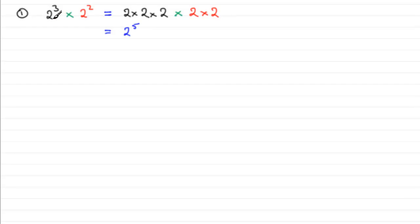We should be able to go straight to this answer without writing it all out in full. This suggests that all we need to do is add our powers, as long as our base value is exactly the same. Our base value in this example is 2.